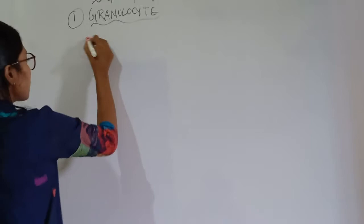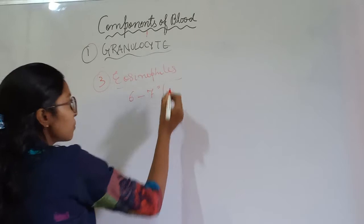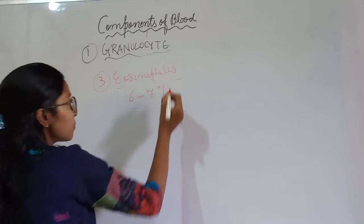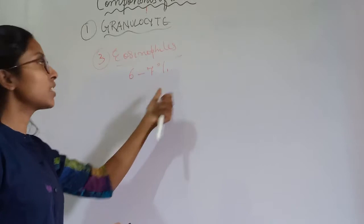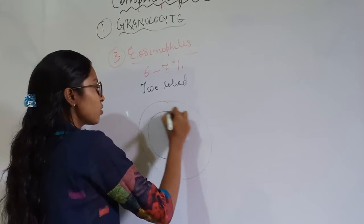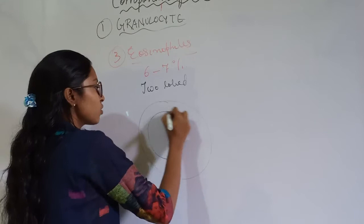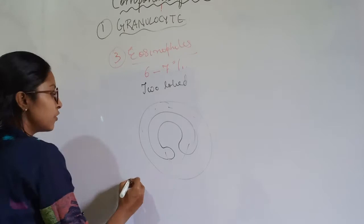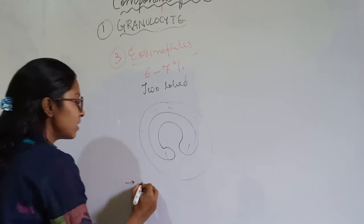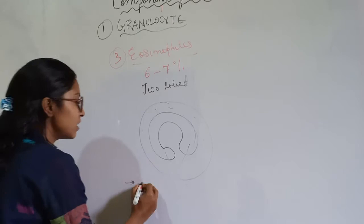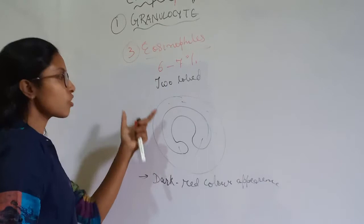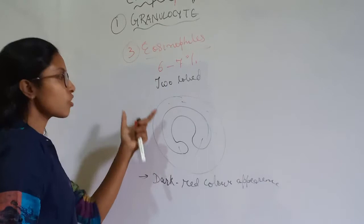The third type is eosinophils. Eosinophils constitute about 6 to 7% of WBCs. They are two-lobed, and when stained they appear dark red in color, which indicates their presence among white blood cells.